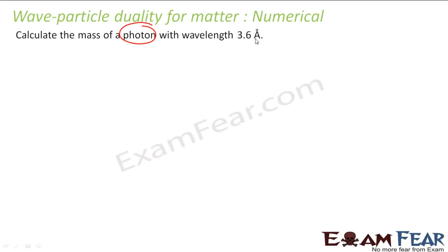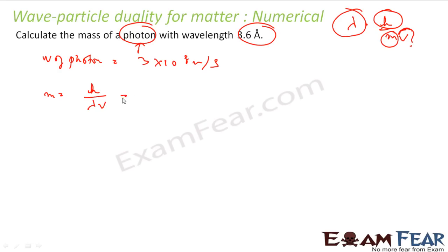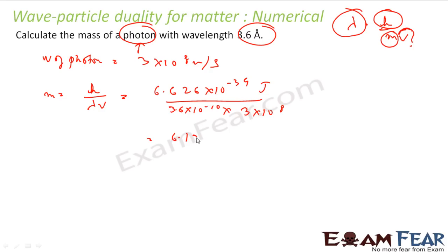We have to calculate the mass of a photon with a given wavelength. I know the formula λ = h/mv, so m = h/(λv). Since this is a photon, its velocity is the velocity of light: 3×10⁸ m/s. Putting the values: h = 6.626×10⁻³⁴ J·s, wavelength = 3.6 Å converted to meters, and v = 3×10⁸. Solving gives mass = 6.135×10⁻²⁹ kg.